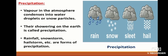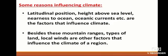Weather is described on the basis of conditions prevailing at a given time, while climate is described on the basis of conditions prevailing over a longer period of time. This means weather changes frequently, but a change in climate takes place only after a long period of time.